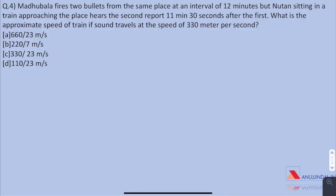Question 4. Madhubala fires two bullets from the same place at an interval of 12 minutes but Newton sitting in a train approaching the place hears the second report 11 minutes 30 seconds after the first. What is the approximate speed of the train if sound travels at the speed of 330 meter per second? This is a typical case of relative speed.